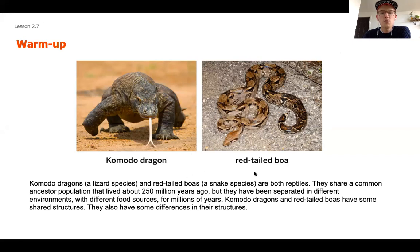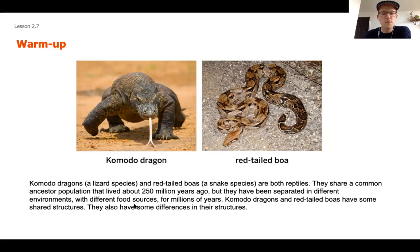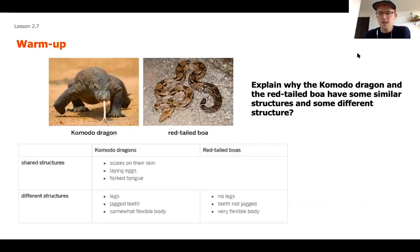In our warm-up, we're going to be looking at a Komodo dragon and a red-tailed boa. Komodo dragons are a lizard species and red-tailed boas are a snake species. Both are reptiles. They share a common ancestor population that lived about 250 million years ago, but they have been separated into different environments with different food sources for millions of years. They have some shared structures as well as some differences.